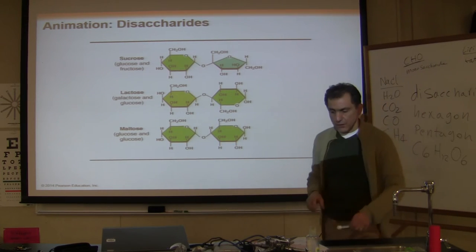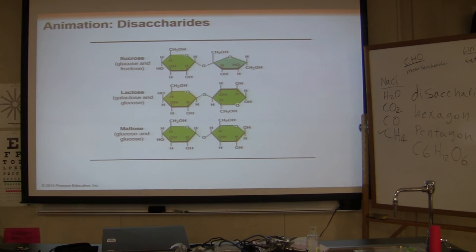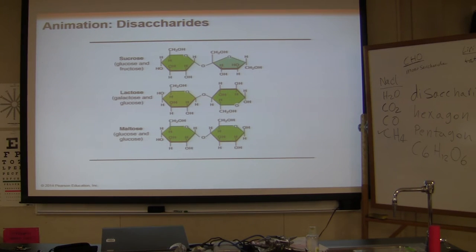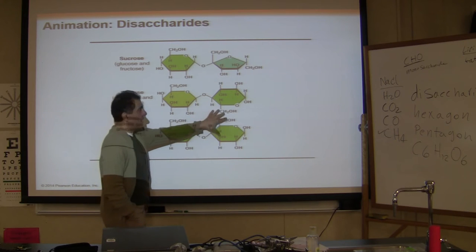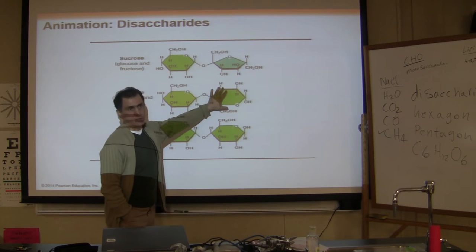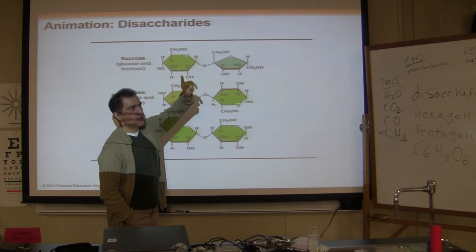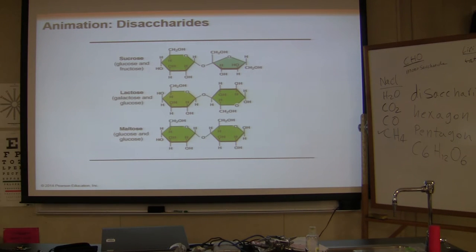The three disaccharides you need to know are: maltose (glucose + glucose), sucrose (glucose + fructose), and lactose (glucose + galactose). Some of you are lactose intolerant — you cannot digest dairy products. Galactose is an isomer of glucose: six carbons, twelve hydrogens, six oxygens — C6H12O6. Fructose and galactose are both isomers of glucose.